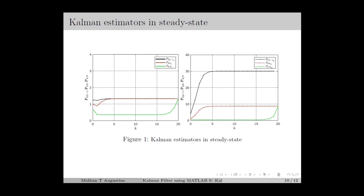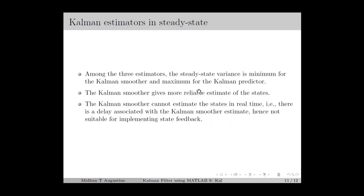Figure 1 shows the plot of the diagonal elements of the Riccati matrix for the LTI system example considered in the previous lecture. The black curve corresponds to the Kalman predictor, the red one to the Kalman filter, and the green one to the Kalman smoother. As k increases, the diagonal elements of the Riccati matrix converge to some fixed value for the Kalman predictor and Kalman filter, approximately for k greater than 5. For the Kalman smoother, which uses a backward recursion algorithm, the steady state period occurs during the initial time instances. From this plot, the steady state variance is minimum for the Kalman smoother and maximum for the Kalman predictor, meaning the Kalman smoother gives the most reliable estimate. However, as discussed in previous lectures, the Kalman smoother cannot estimate states in real time — there is a delay associated with its estimate, so it is not suitable for implementing state feedback.